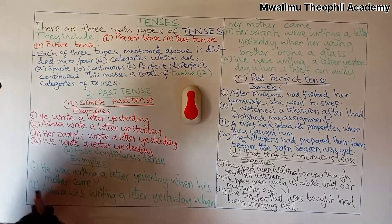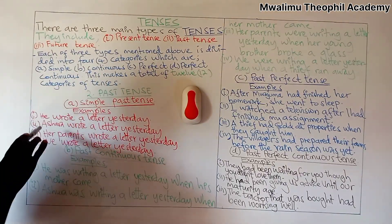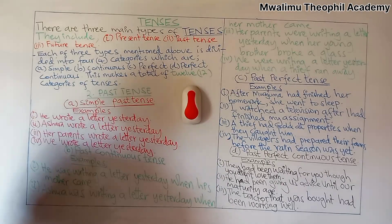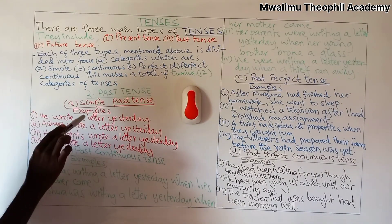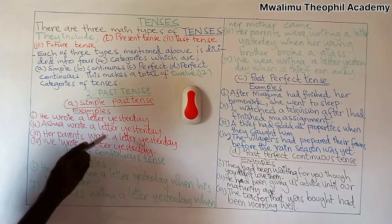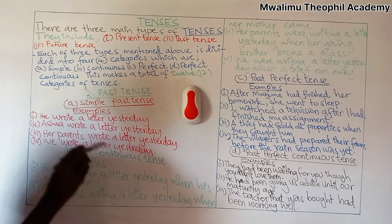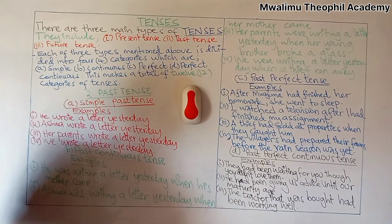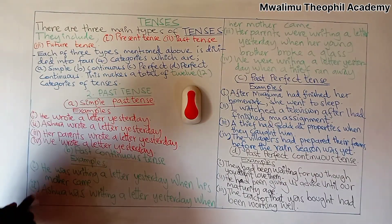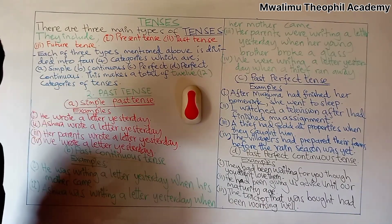We have different examples of sentences which are in simple past tense. The first example is: he wrote a letter yesterday. The second one: Ashura wrote a letter yesterday. The third example: her parents wrote a letter yesterday. The fourth one: we wrote a letter yesterday. In these four sentences, after a pronoun or noun, the verb which follows is a verb in simple past. As you know, the simple past of the verb 'to write' is 'wrote'.